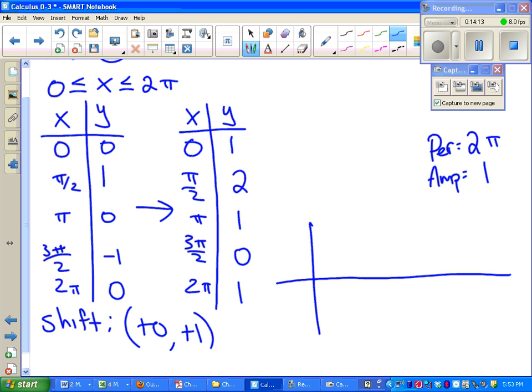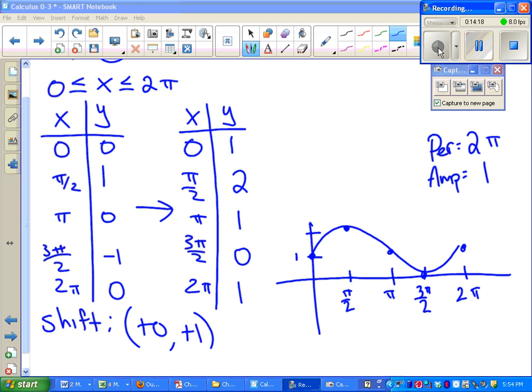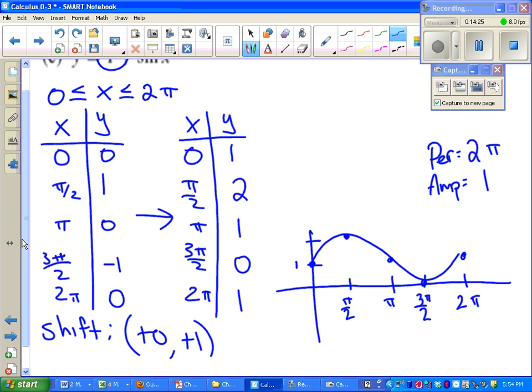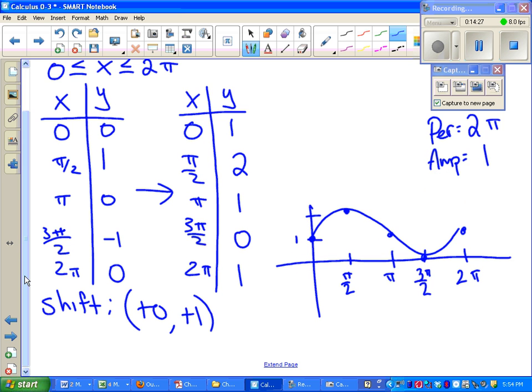At this point, we can plot our five ordered pairs, draw a smooth curve, and we're done. Once we've got all those points plotted, we should see a sine curve that shifted up one unit, which is exactly what we have here. That's it.